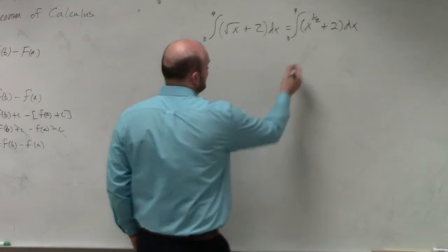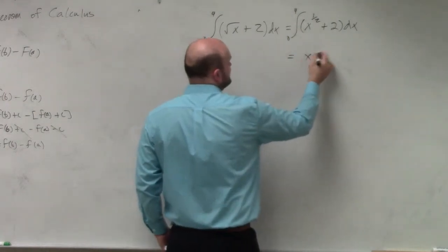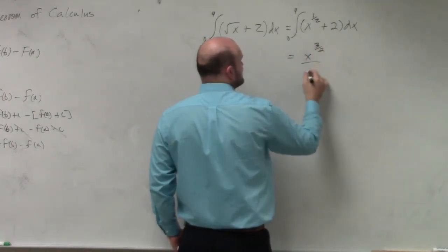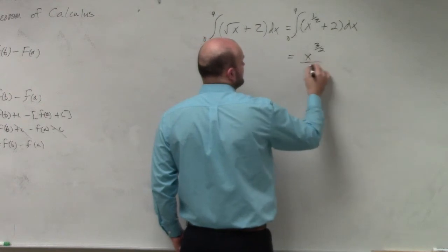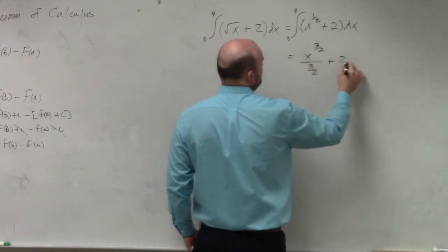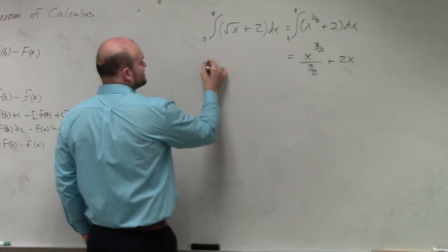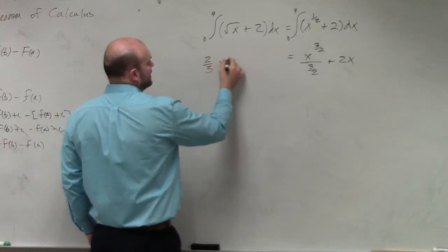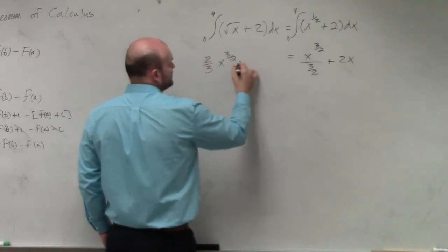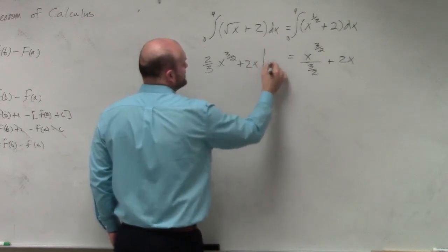So therefore, when you're going to go ahead and integrate this, you're going to have x to the 3 halves divided by 3 halves plus 2x. Or therefore, we can rewrite this as 2 thirds x to the 3 halves plus 2x from 0 to 4.